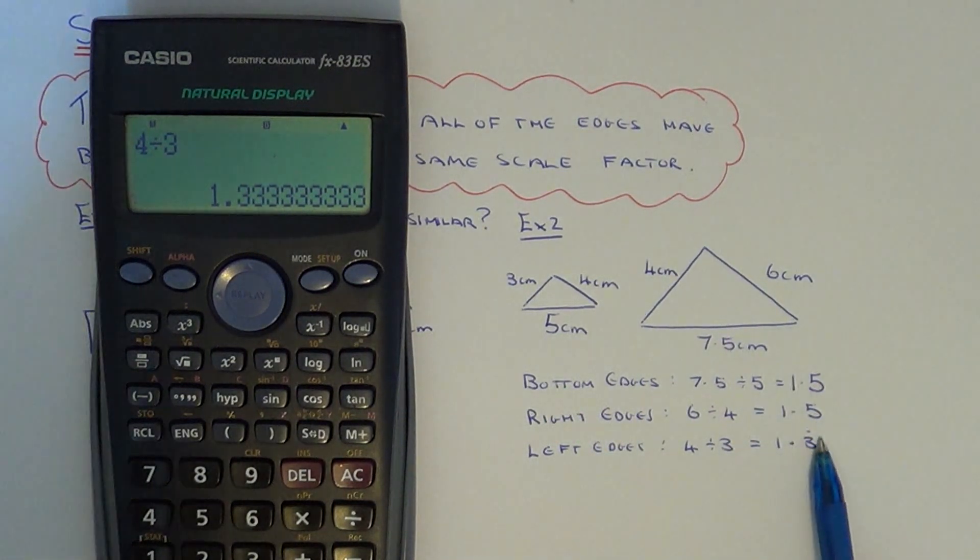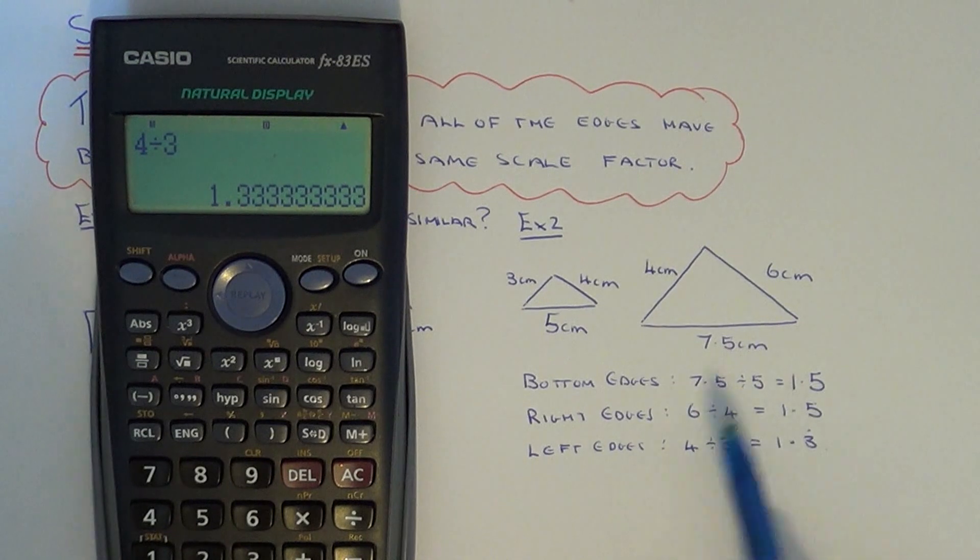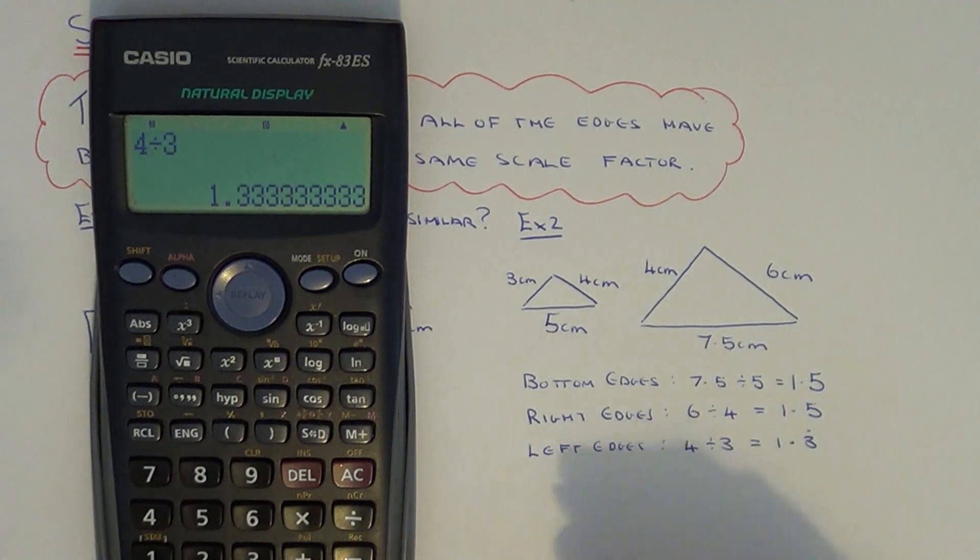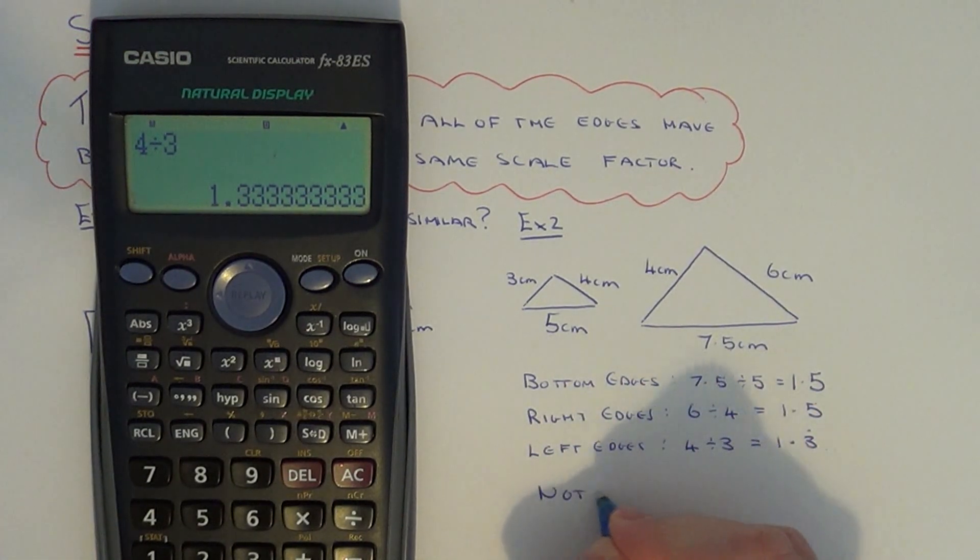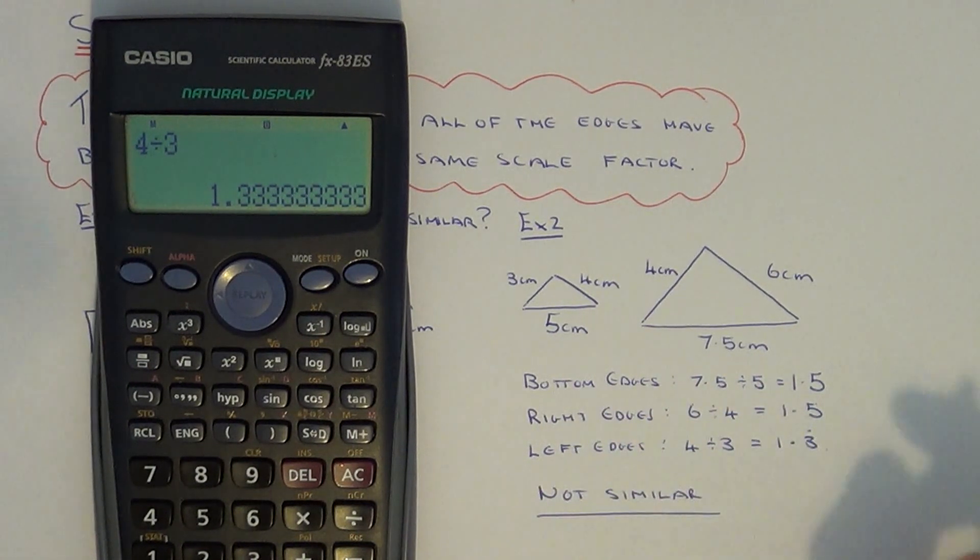Since this scale factor is different from the other two, these two shapes are not similar. If they're going to be similar, then all the scale factors must be the same for all the corresponding edges.